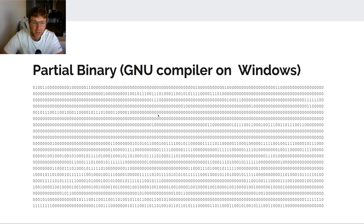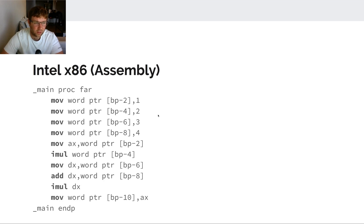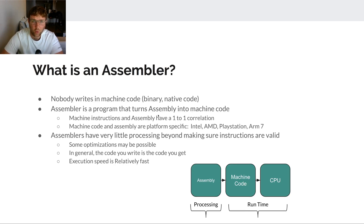In an earlier video I used this example — this is a partial binary that I built using the GNU compiler on Windows. We didn't really know what a compiler was at that point. I also talked briefly about assembly — this was from that same video, where I used Intel x86 assembly and showed why we wouldn't want to program like this.